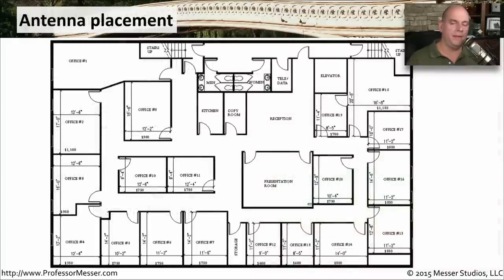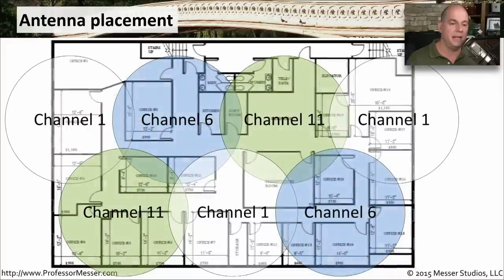Another challenge is where do you put the access points themselves? You, of course, have to think about where you need these particular signals, and you also have to think about the frequencies that might be in use. If you're using 802.11b or 11g frequencies, then you might want to choose channels that are non-overlapping. And depending on the size of the area, you may have to use many, many different access points.